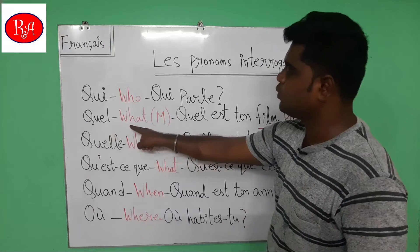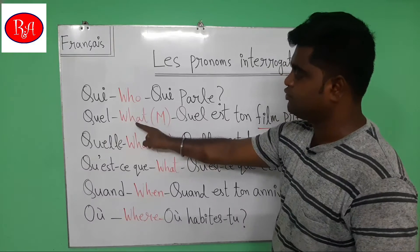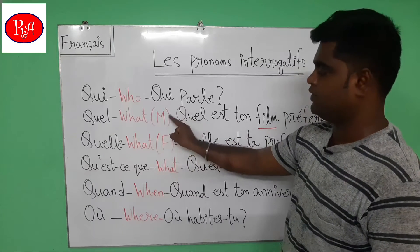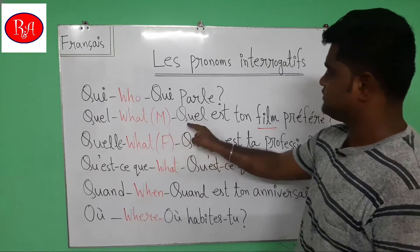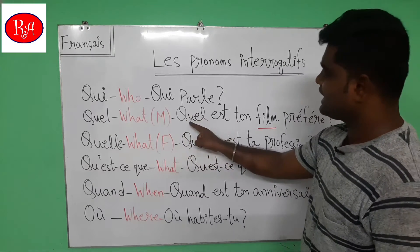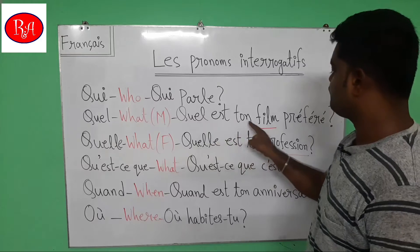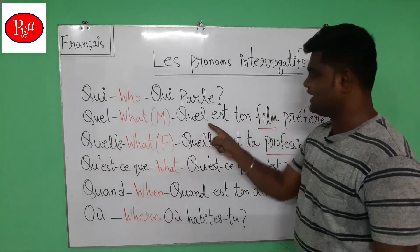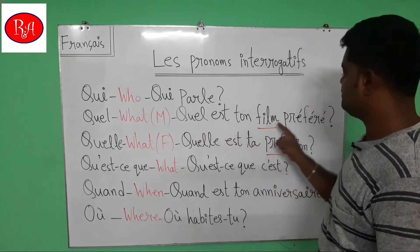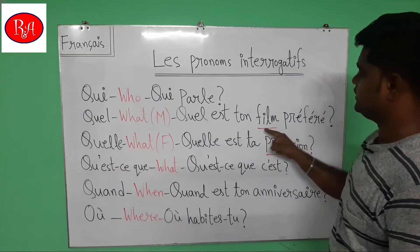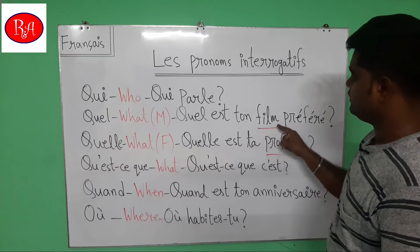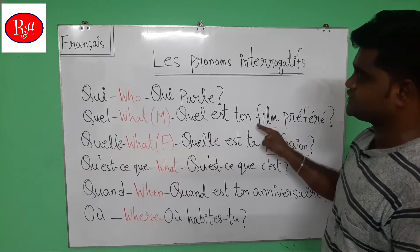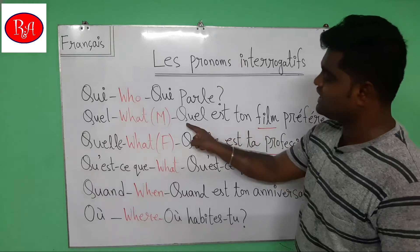Next one, 'Quel' — that means 'what', but used for masculine form. For example, 'Quel est ton film préféré?' — 'Quel est ton film préféré?' Here, 'film' is masculine form, that's why we are using 'Quel'.